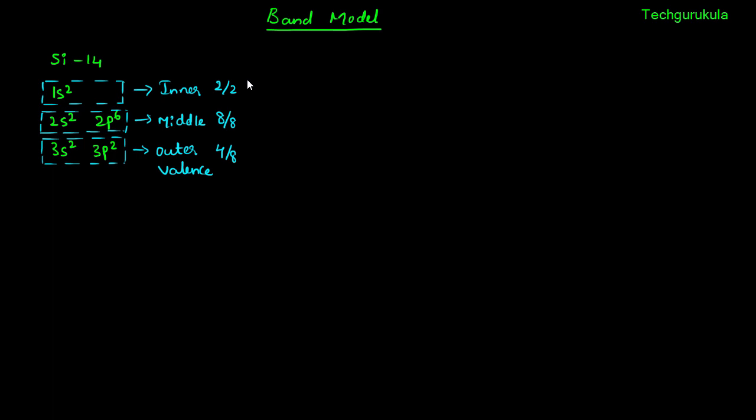In this video we will see the band model of a semiconductor material, specifically for silicon. The atomic number of silicon is 14. Assuming it is an isolated silicon atom, its electron configuration shows the inner shell has two available states and two electrons filling them, and the middle shell has eight available states, all eight of which are filled. The outer shell, also called the valence shell, is partially filled — four out of eight states are filled.